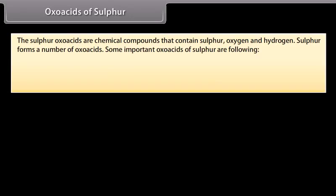Oxoacids of sulphur. The sulphur oxoacids are chemical compounds that contain sulphur, oxygen and hydrogen. Sulphur forms a number of oxoacids. Some important oxoacids of sulphur are the following: